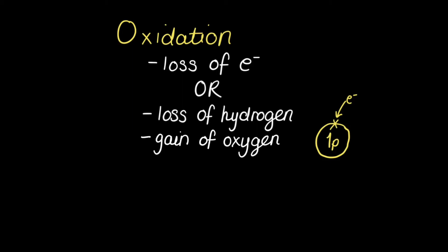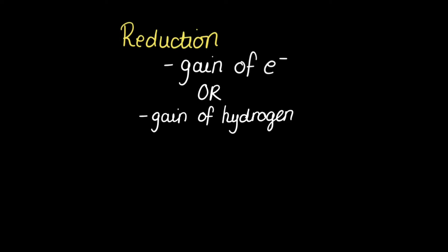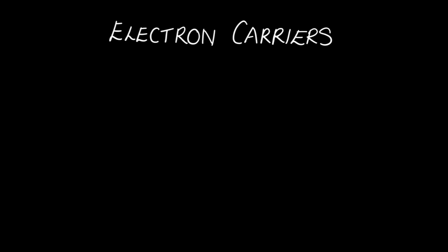You can also identify oxidation by a gain of oxygen. Conversely, reduction is a gain of electrons, but it can also be identified by a gain of hydrogen — since hydrogen is made up of one proton and one electron, gaining hydrogen means gaining an electron. Reduction can also be identified by a loss of oxygen.